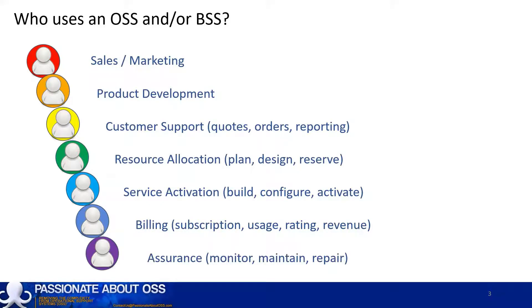And finally, there is a broad cluster of people who look after the assurance of the network and the services that the network carries. This includes the network operations centre, service operations centre, and security operations centre staff. We should also call out another important category not shown in this list, which are the field workforce. They fulfil a variety of roles that look after the CSP's assets and resources across service activation or fulfilment and assurance style use cases. These people plan, build, configure, and maintain the all-important physical networks.